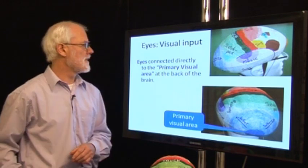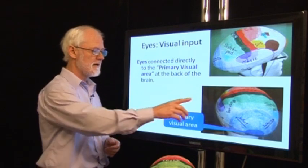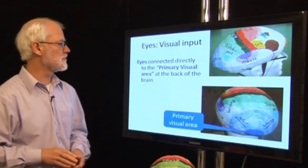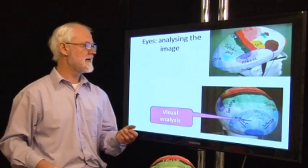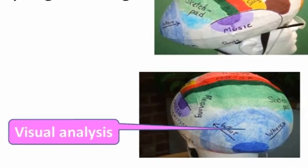One major input to the brain is our eyes, vision. The picture initially arrives right at the back of the brain in the primary visual area. The brain analyzes it in the area around the outside, sometimes called the visual association area.